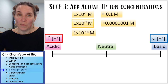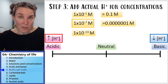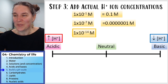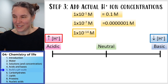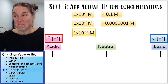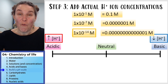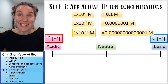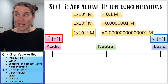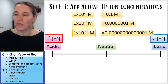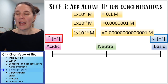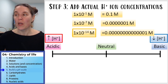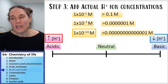And how about the third one? For 10 to the negative 14, we move the decimal point 14 places, and we end up with all those zeros in front of the one — that's 100 trillionths of a mole.